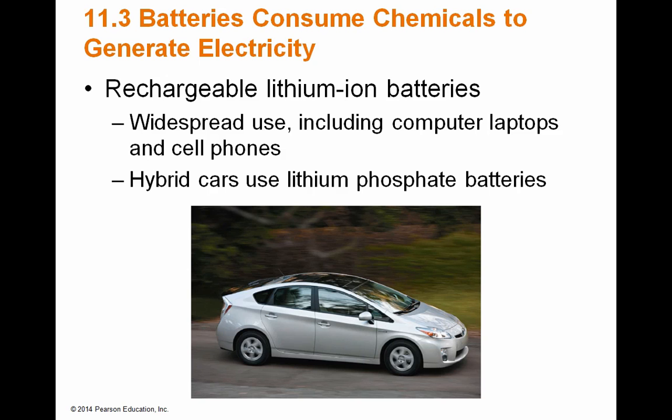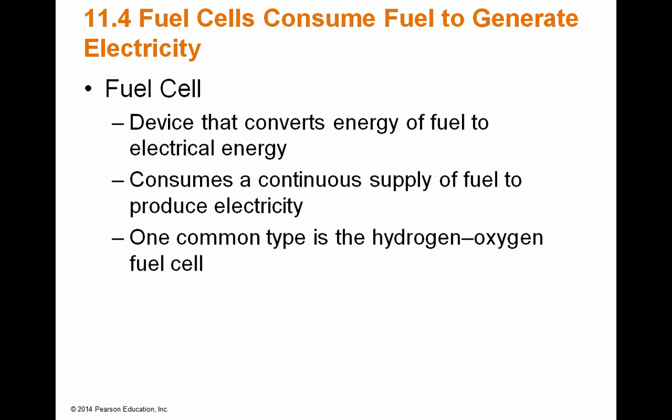Now let's discuss fuel cells and photovoltaic cells — two more types of energy devices. A fuel cell is a device that converts the energy of a fuel into electrical energy. Whereas batteries rely on chemistry like dry cell or metal hydride, a fuel cell uses a hydrogen-oxygen type fuel or some form of combustible fuel that is consumed in order to produce electricity.